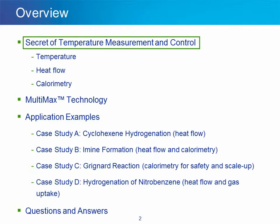The first example will be about hydrogenation of cyclohexene, focusing on the use of heat flow training to quickly extract simple and relevant information. The second example, formation of an imine, will be about the combined use of heat flow training and calorimetry. Then we will talk about a Grignard reaction with some emphasis on process development and process safety. And finally, we will discuss a nitrobenzene hydrogenation example combining heat flow training and gas uptake measurement. We will wrap up this webinar with a question and answer session.